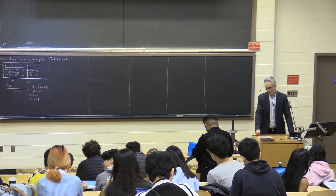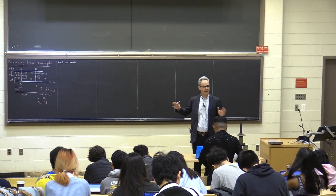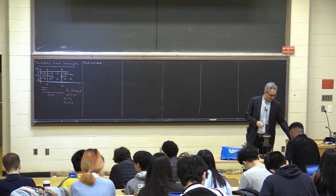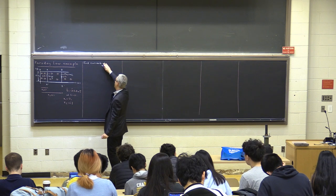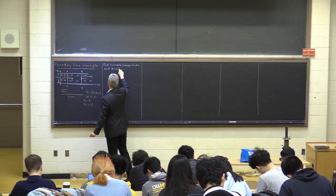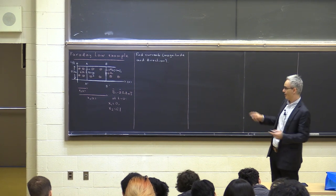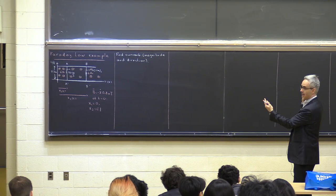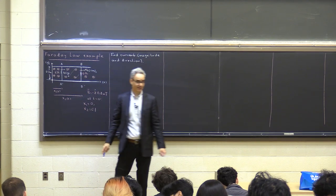Good morning, let's get started. I have a few more examples today on Faraday's law. This is a very classical example — we started with a moving rod inside a magnetic field. I've extended this example with two rods moving within a constant magnetic field. The question is to find the current magnitude and direction flowing in the circuit. The right rod moves at 40 cm/s and the left rod at 10 cm/s, so the area of the circuit is constantly expanding.